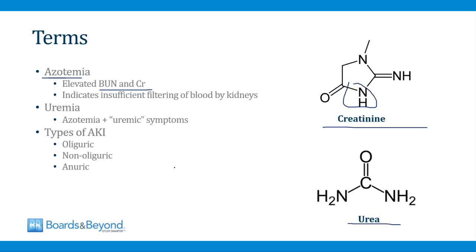This is the structure of creatinine shown on the screen here — it has nitrogen — and this is the structure of urea, which also has nitrogen. So any patient who has azotemia has high levels of BUN and creatinine, and this means the patient's kidneys are insufficiently filtering the blood. The term uremia technically means high levels of urea in the blood, but when we use the term uremia clinically, we use it to describe patients who have azotemia plus uremic symptoms.